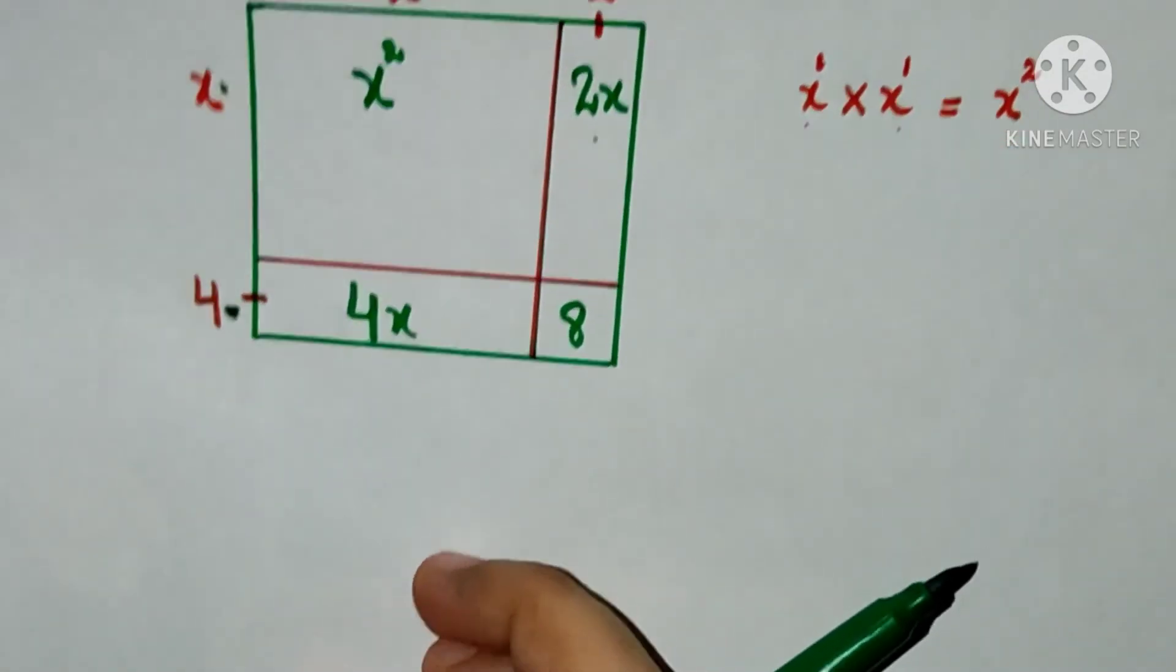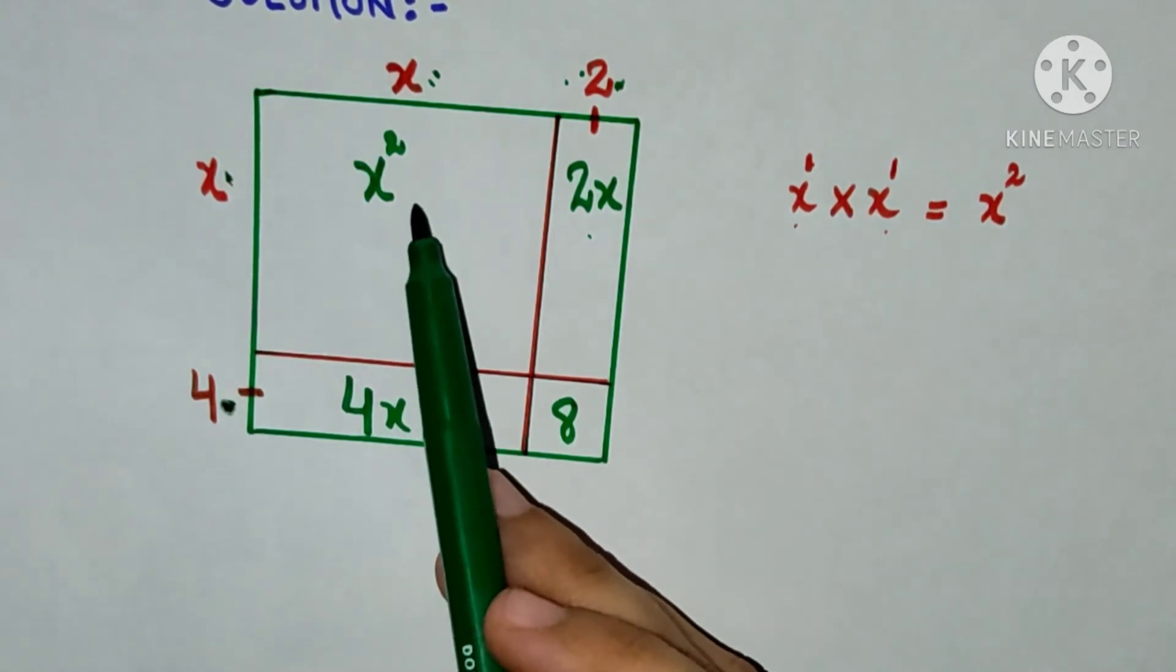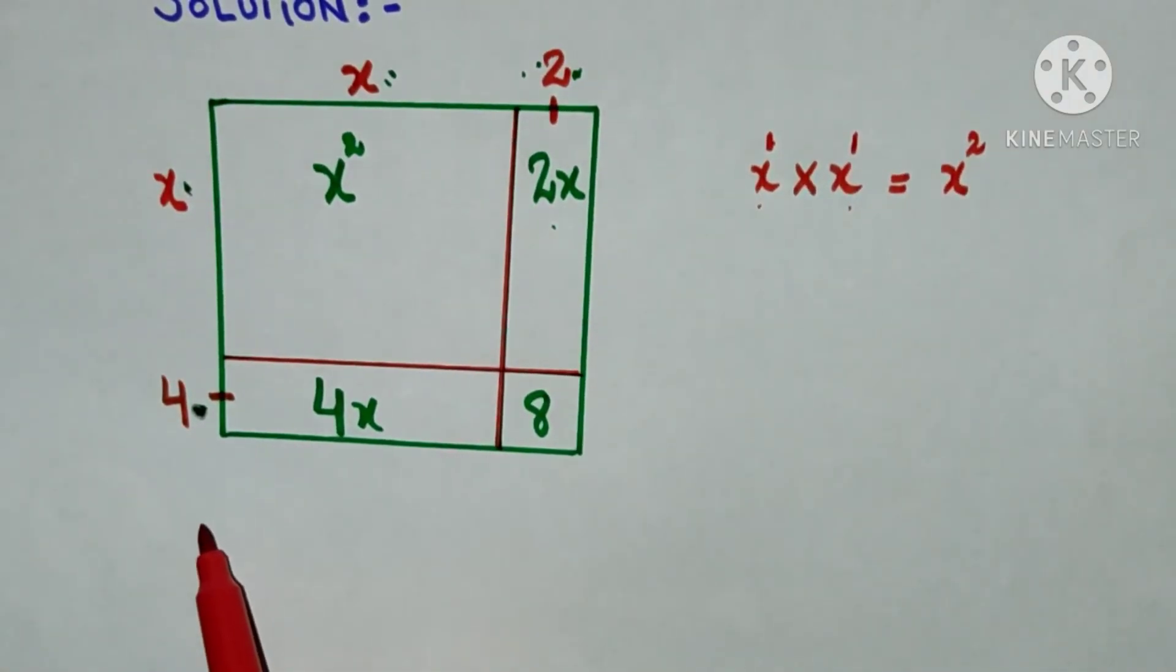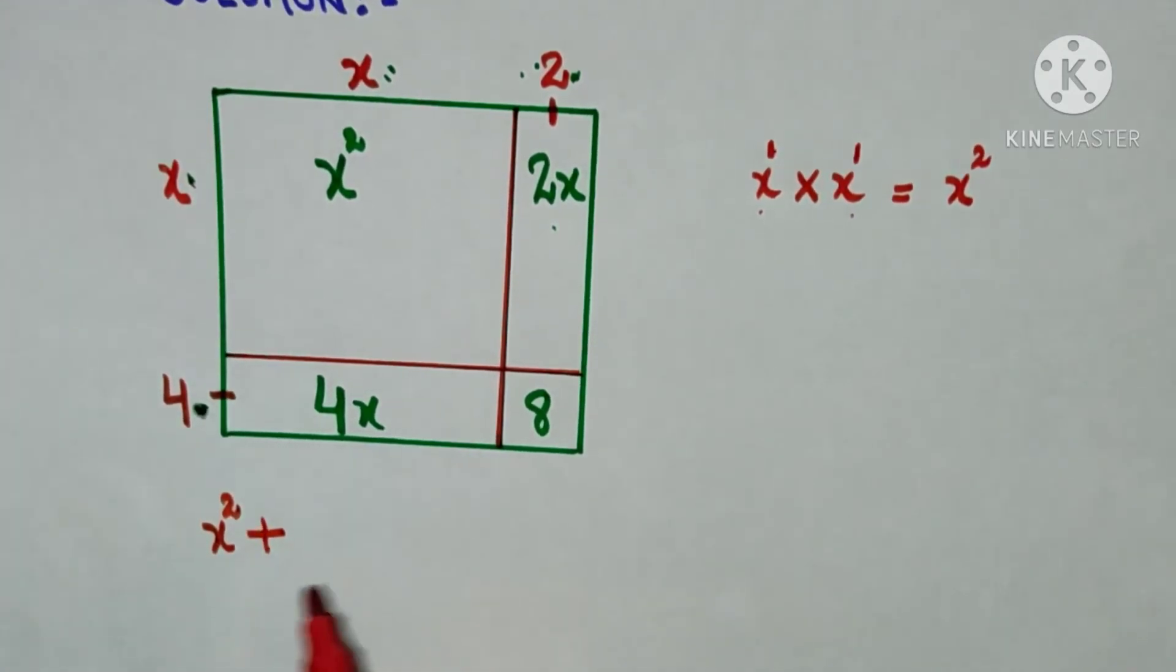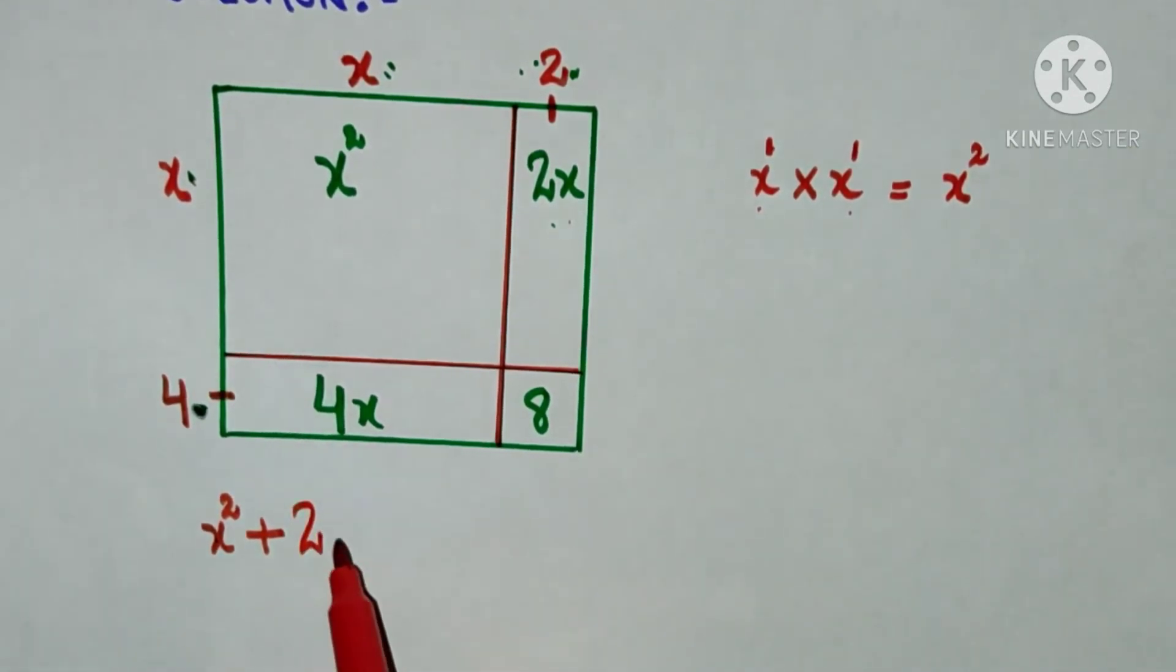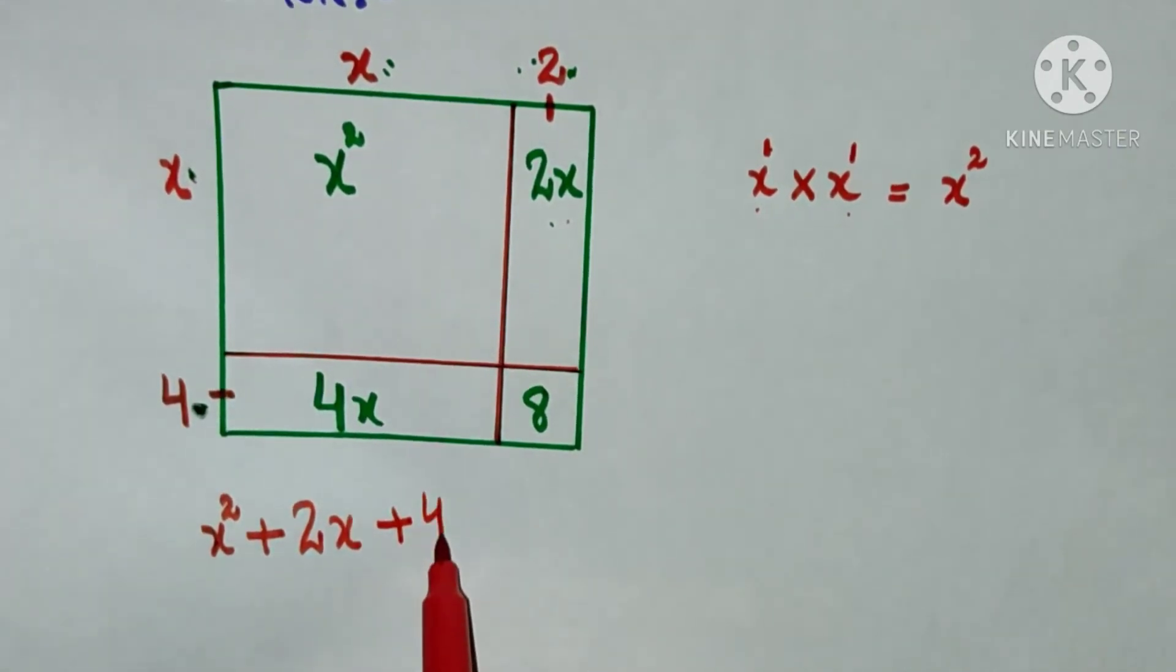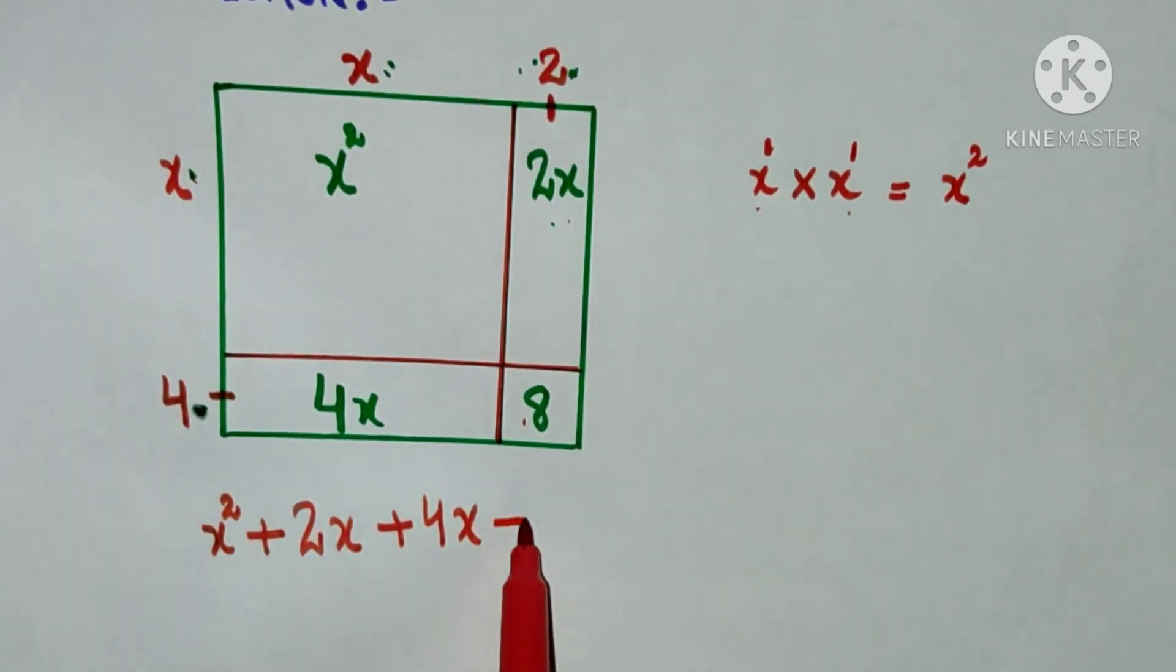Let's see how. Inside the square I have x squared, I have 2x, I will write here 2x. Inside the square I have 4x. I have 4x, I will write here 4x. And just 8 left. So the expression we get is x squared plus 2x plus 4x plus 8.